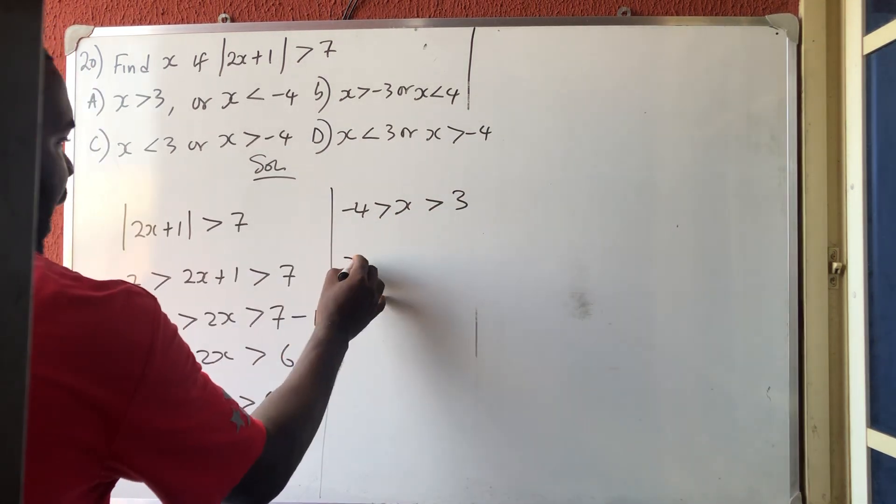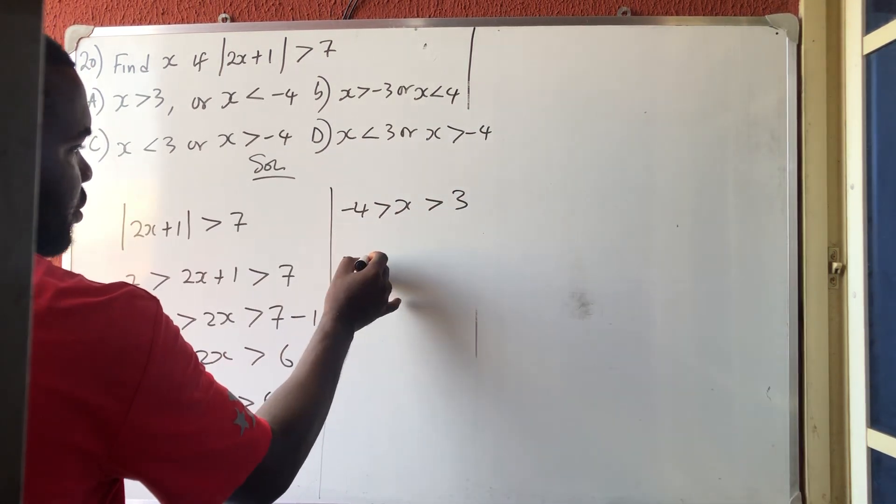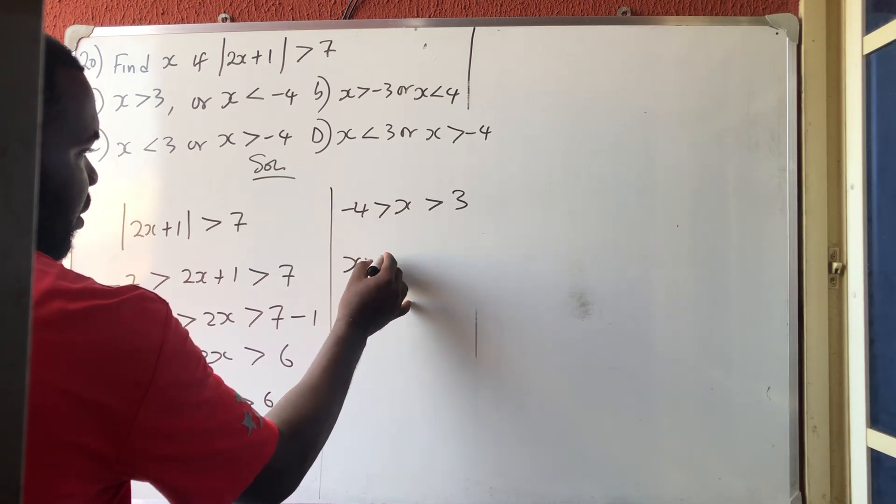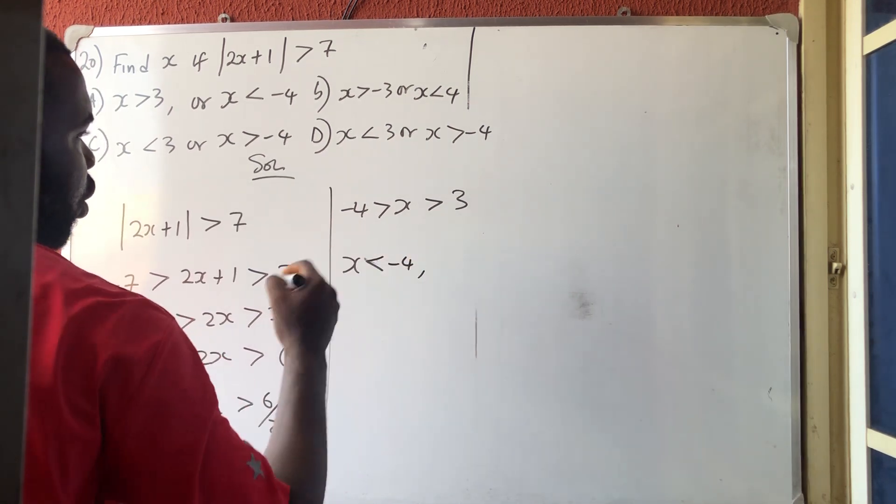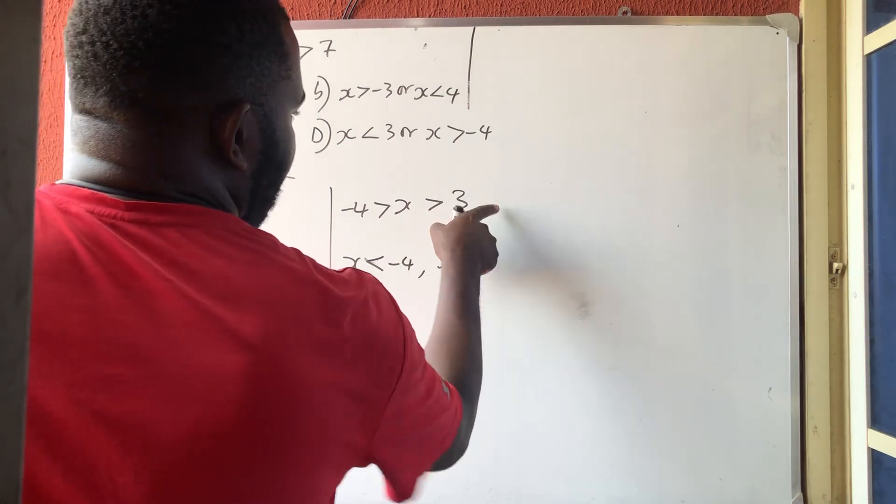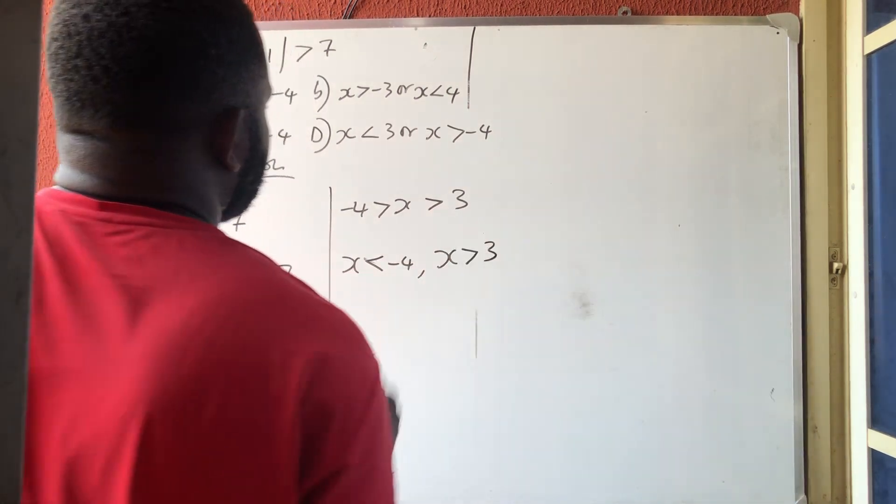Now bring them out. X, this arrow is pointing x, so it will still be pointing x. x pointing x minus 4, x again. The arrow is pointing 3. Pointing 3, so that is that.